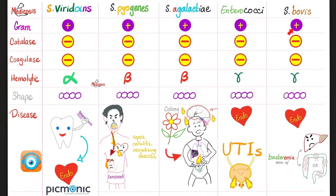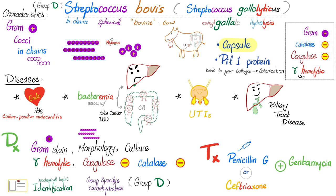Streptococcus bovis is gram-positive, coagulase negative, catalase negative, and gamma hemolytic. They appear in chain-like arrangements typical of Streptococci. It causes endocarditis and bacteremia in patients with GI malignancy, including colon cancer, liver disease, and inflammatory bowel disease.